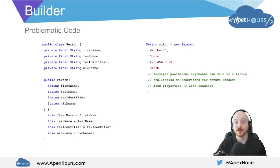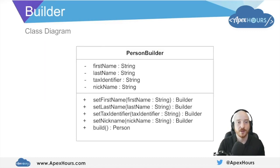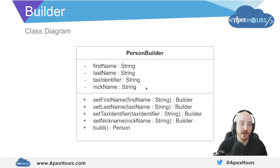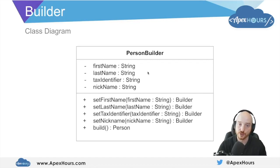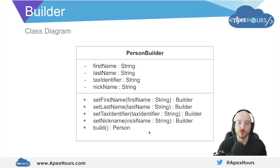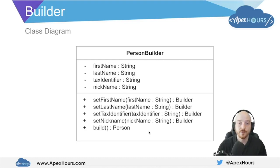So this is the problem we're trying to solve with the builder pattern. Let's take a look at the class diagram. Here's a look at the class diagram for the PersonBuilder. Anytime you're going to use a builder, you'll have an enumerated list of the private variables you're trying to set, setters for each one of these variables, and then a method called build, which will construct the object you're trying to instantiate. Let's take a look at the actual code behind this.